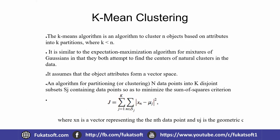K-means clustering is an algorithm to cluster n objects based on attributes into k partitions, where k is less than n. It is similar to the expectation-maximization algorithm for mixtures of Gaussians, in that both attempt to find the centers of natural clusters in the data.